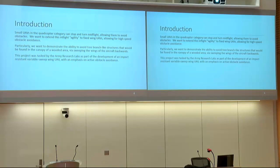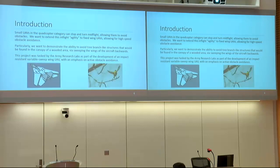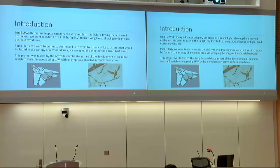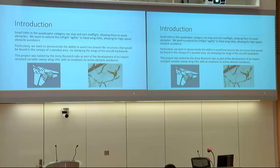This project was tasked by the Army Research Labs as part of their development of an impact-resistant variable sweep-wing UAV. On the UMD side, we have an emphasis on active obstacle avoidance — avoiding collision at all costs. In the bottom left you can see an F-14 Tomcat demonstrating that sweeping wing capability, and on the bottom right, some motivation from nature showing birds flying through gaps in tree branches.